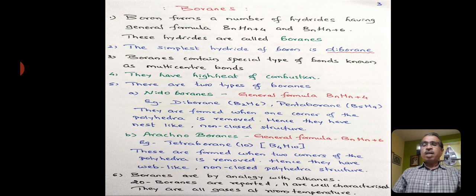In case of arachnoboranes, the general formula is BnHn plus 6. For example, tetraborane, B4H10. These are formed when two corners of the polyhedra are removed. Hence, they have web-like, non-closed polyhedra structure.